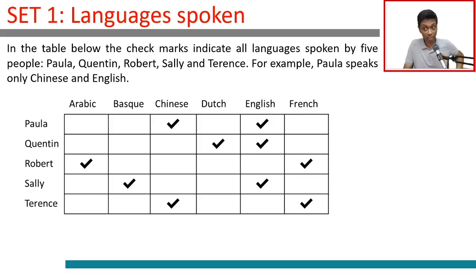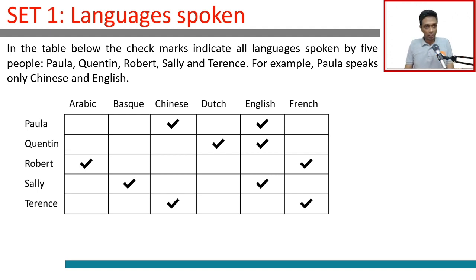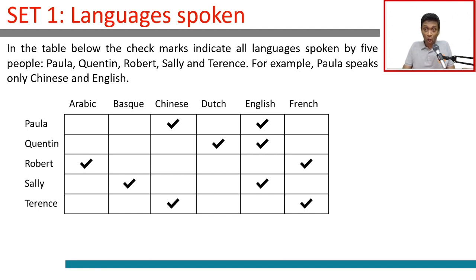This is a tougher question than what you have seen before, but it's also very much doable. In the table below, the check marks indicate all languages spoken by 5 people: Paula, Quentin, Robert, Sally, and Terence.